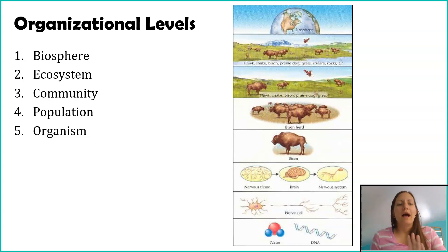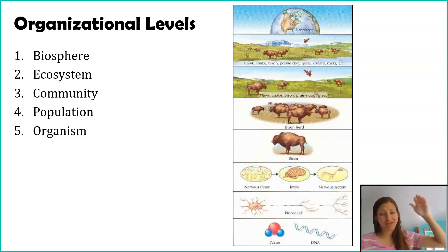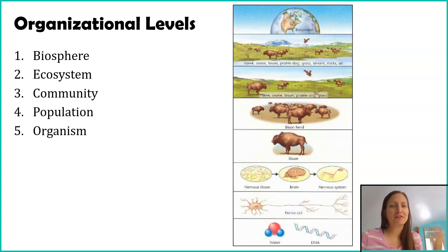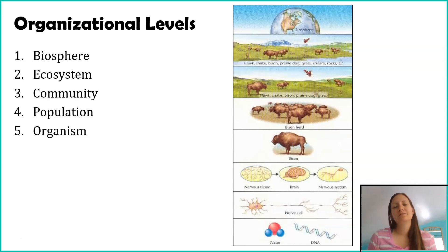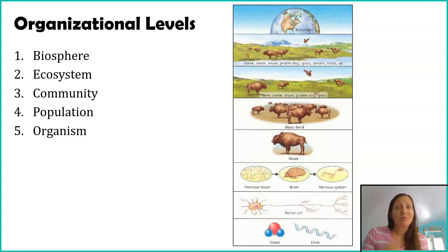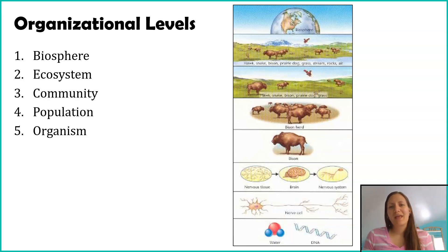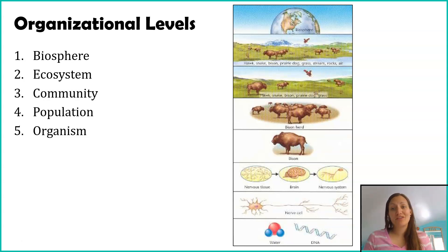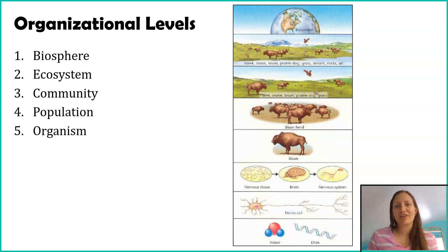The largest level that exists is the biosphere — essentially Earth. From there we go to ecosystem, to community, to population, and then organism. If you look at this image there are things smaller than organism, like tissues, cells, and molecules, but we're not really going to explore those. If you take a different biology course you'll probably learn more about those levels.